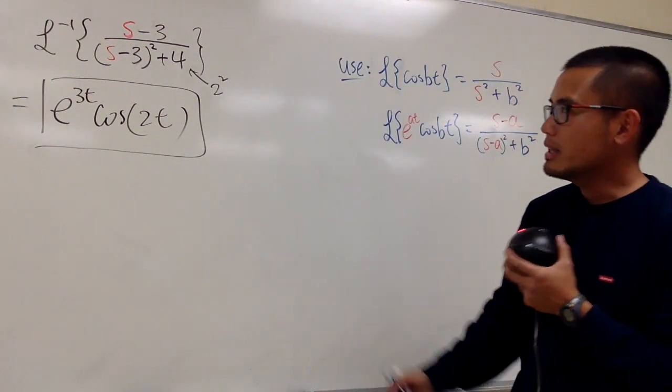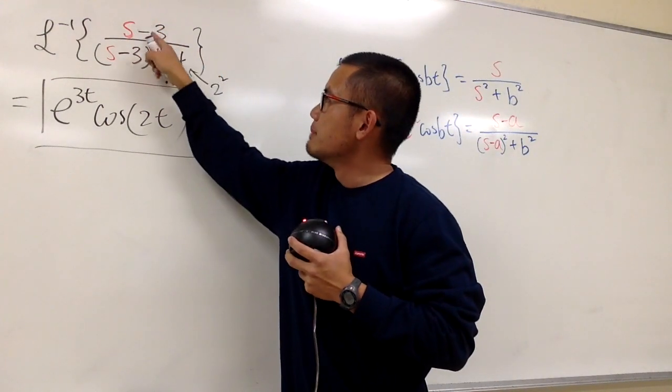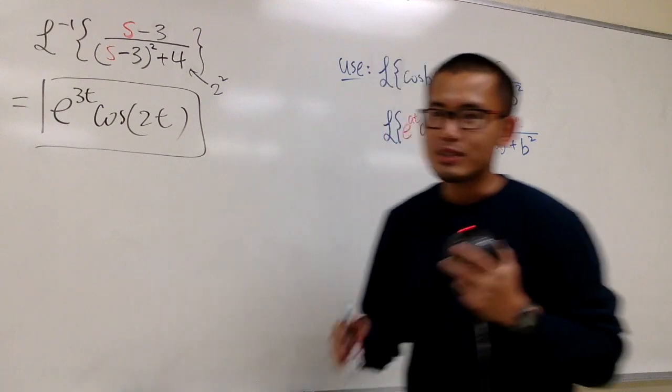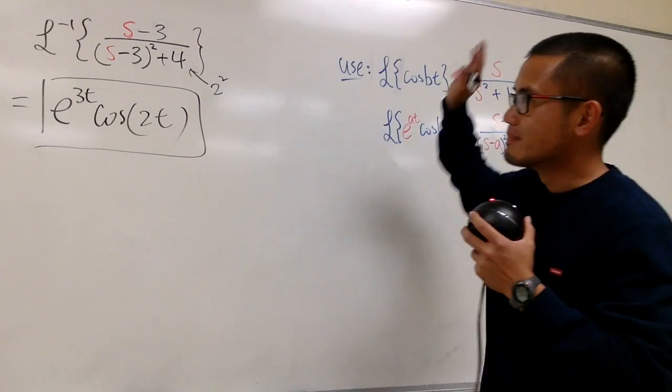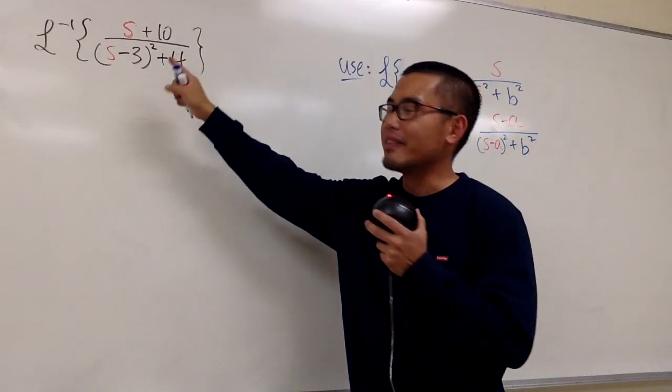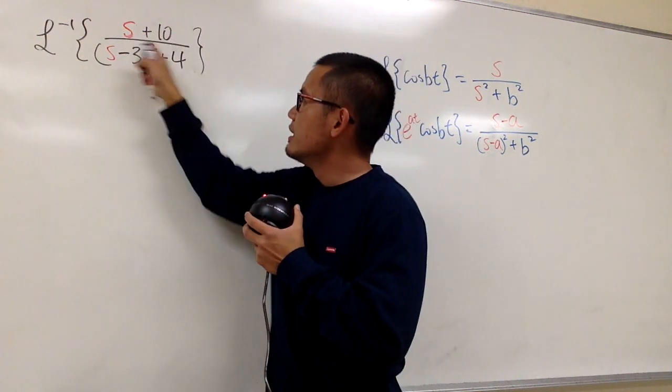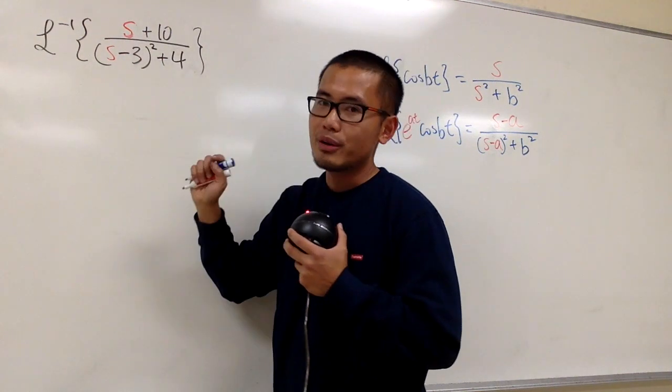Now you may be wondering, what if this part, the s minus 3, does not match with this s minus 3 right here? That's what I'm about to show you now. Let's look at this one. What if the top is s plus 10 instead? As you can see, this is different than s minus 3 right here.